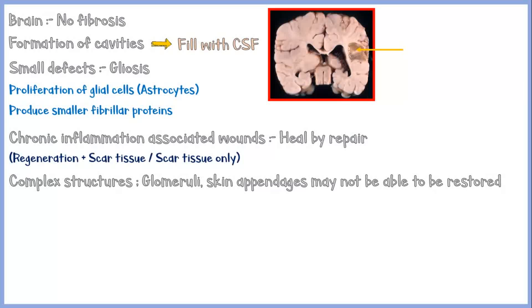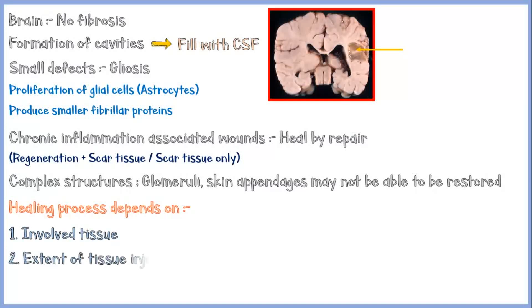The process of healing depends on three main factors: the involved tissue — whether it is capable of regeneration or not; the extent of tissue injury — whether the extracellular matrix framework is intact; and the nature of the injury — whether it is persistent and associated with chronic inflammation, or whether it is an acute one.